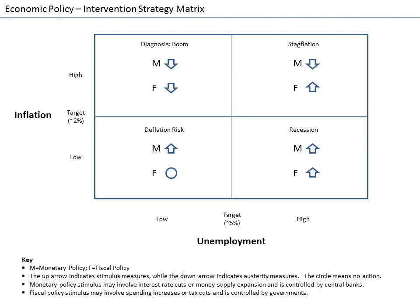Economists interested in long-run increases in output study economic growth. Advances in technology, accumulation of machinery and other capital, and better education and human capital are all factors that lead to increased economic output over time. However, output does not always increase consistently. Business cycles can cause short-term drops in output called recessions. Economists look for macroeconomic policies that prevent economies from slipping into recessions and that lead to faster long-term growth.